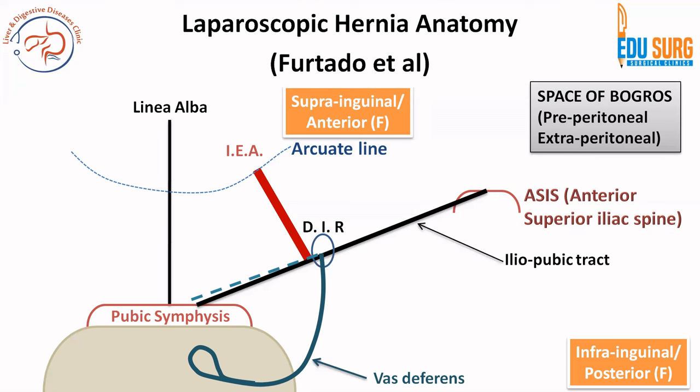Knowing the contents of the inguinal canal — the vas deferens — how can you remember the triangle borders very easily? The vas deferens has to go towards the urinary bladder because it joins the seminal vesicle. So from the deep inguinal ring, the vas deferens will travel towards the midline behind the urinary bladder, whereas the spermatic vessels will go towards the retroperitoneum laterally. This is simply the inverted Y of Furtado: the inferior epigastric artery forms the stalk of the Y, and the vas deferens medially and spermatic vessels laterally form the two arms of the inverted Y.